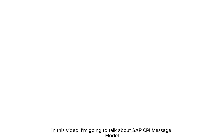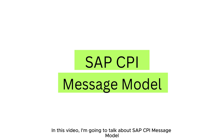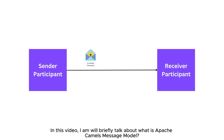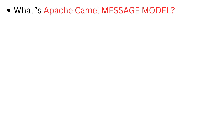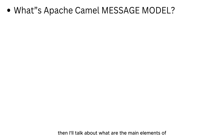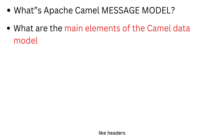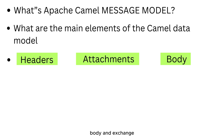Hey guys, how's it going? In this video I'm going to talk about SAP CPI message model, because you need to understand how SAP CPI handles messages internally when you send a message between a sender participant and a receiver participant. I'll briefly talk about what Apache Camel's data model is and how it is used in SAP CPI for handling messages, then I'll talk about the main elements of Apache Camel's data model like headers, attachments, body and exchange.